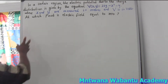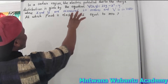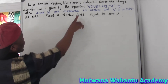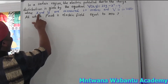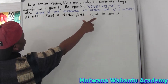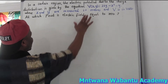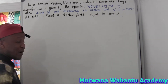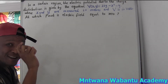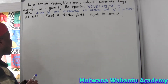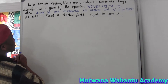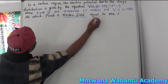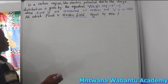Let's get started. In a certain region we've got an electric potential due to a charge distribution, given by the equation right there, where x and y are measured in meters. The question asks at which point the electric field is equal to zero — this is very important. Whenever you get a question, make sure you pay attention to what it's asking.